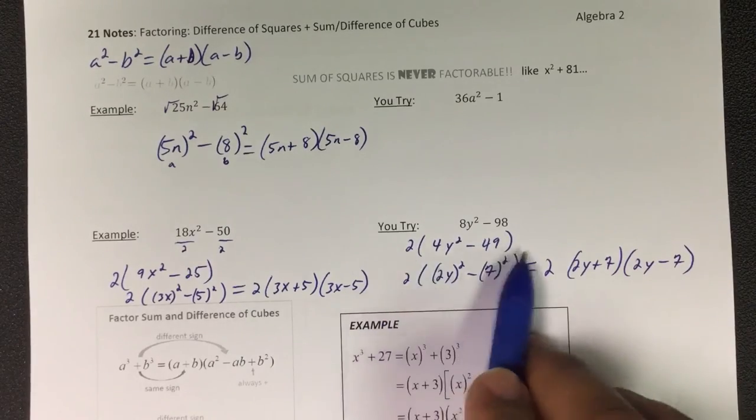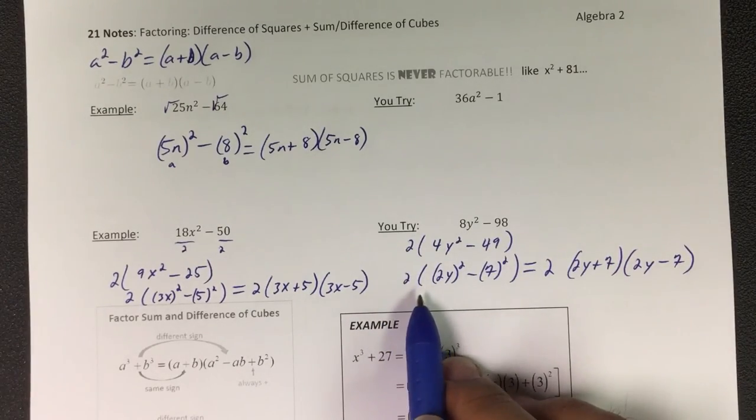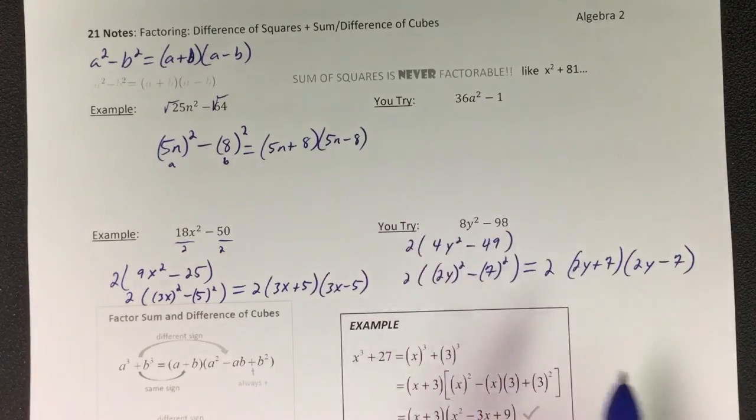Okay, so you'll see they'll start asking us to do multiple steps at once. You do greatest common factor, pull that out, and then do difference of squares, and you'll get a lot of problems like that. Go ahead and try that one right there.